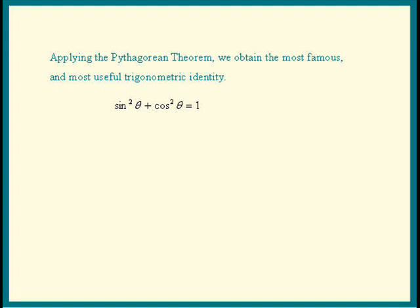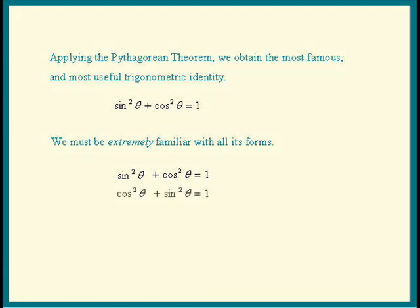We have to be extremely familiar with all its forms. We have sine squared plus cosine squared is 1. Switch the terms, we have cosine squared plus sine squared is 1. Sine squared is 1 minus cosine squared. Cosine squared is 1 minus sine squared. And guess what? We should even recognize it when it's upside down.